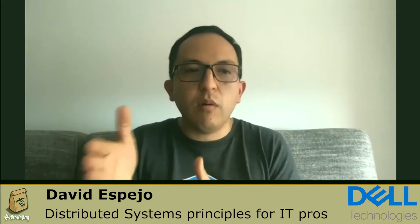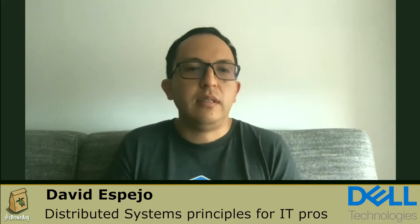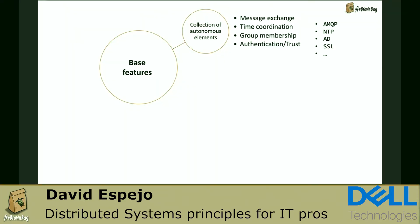Examples of these requirements implemented in day-to-day IT components include AMQP or RabbitMQ — a messaging protocol used by some VMware products. NTP, the Network Time Protocol, provides time coordination for a distributed system. Active Directory is an example of an authentication protocol to accept or deny requests to join a group. And SSL/TLS provides trust for this collection of independent elements.